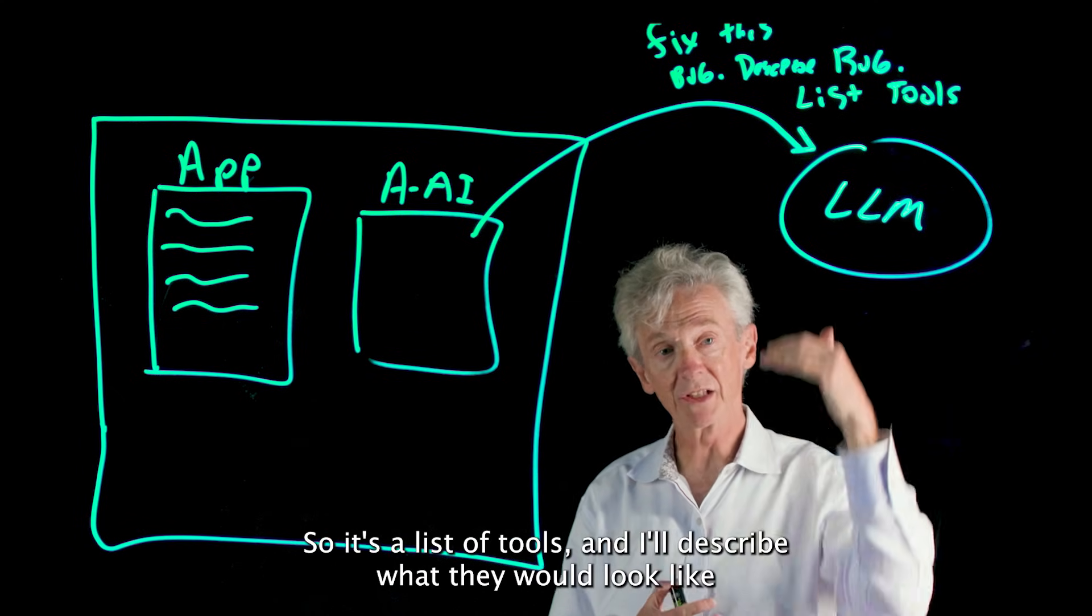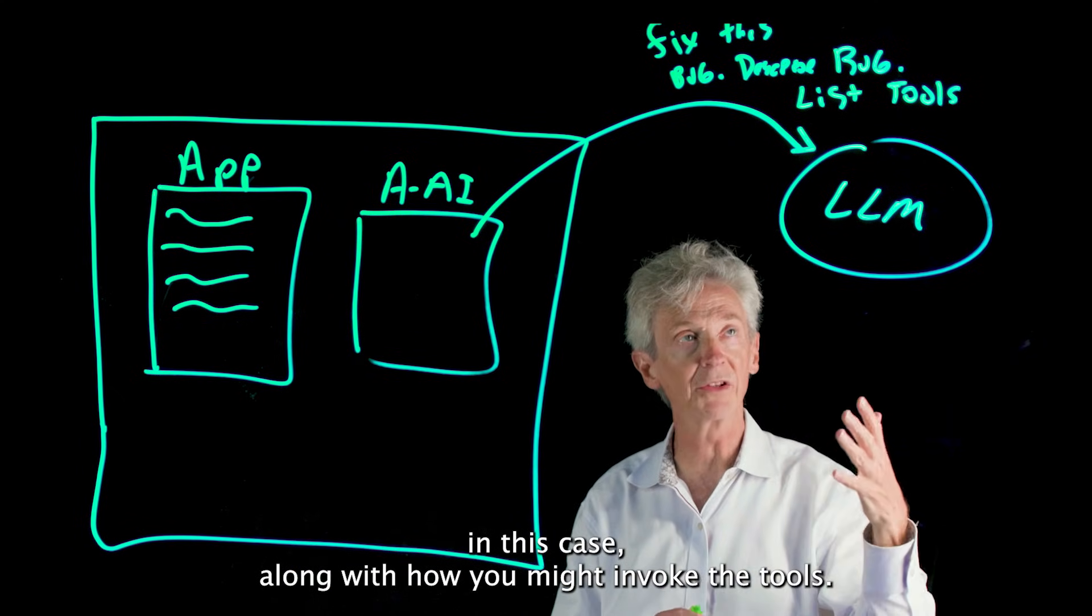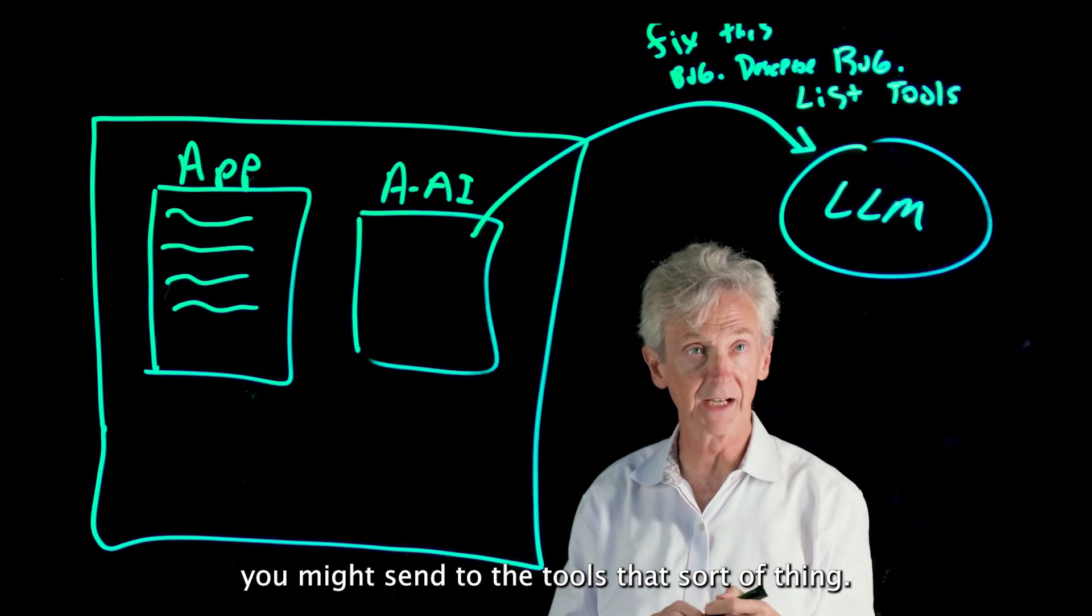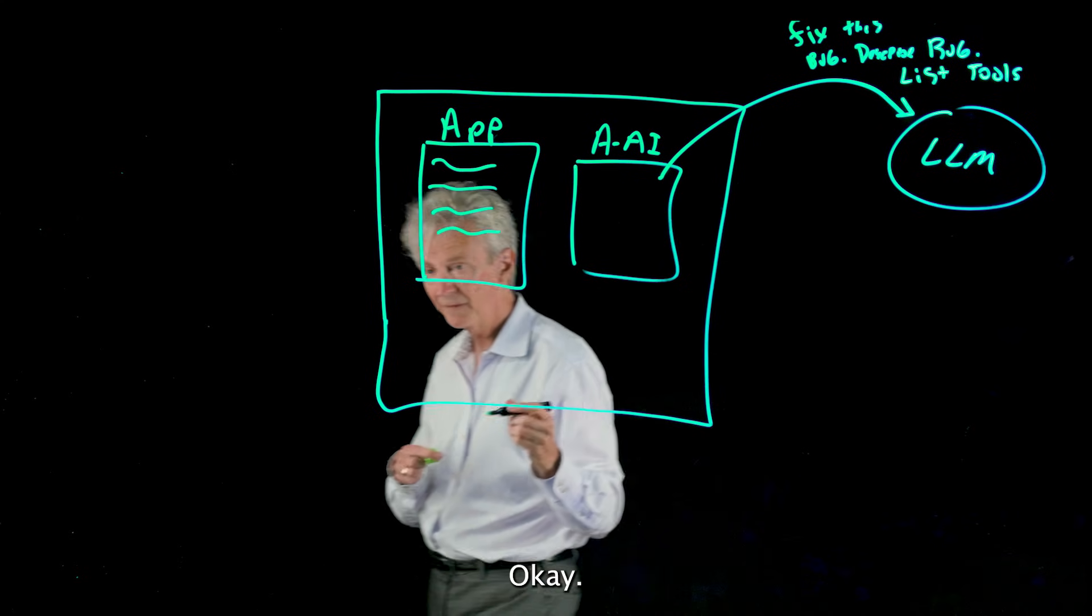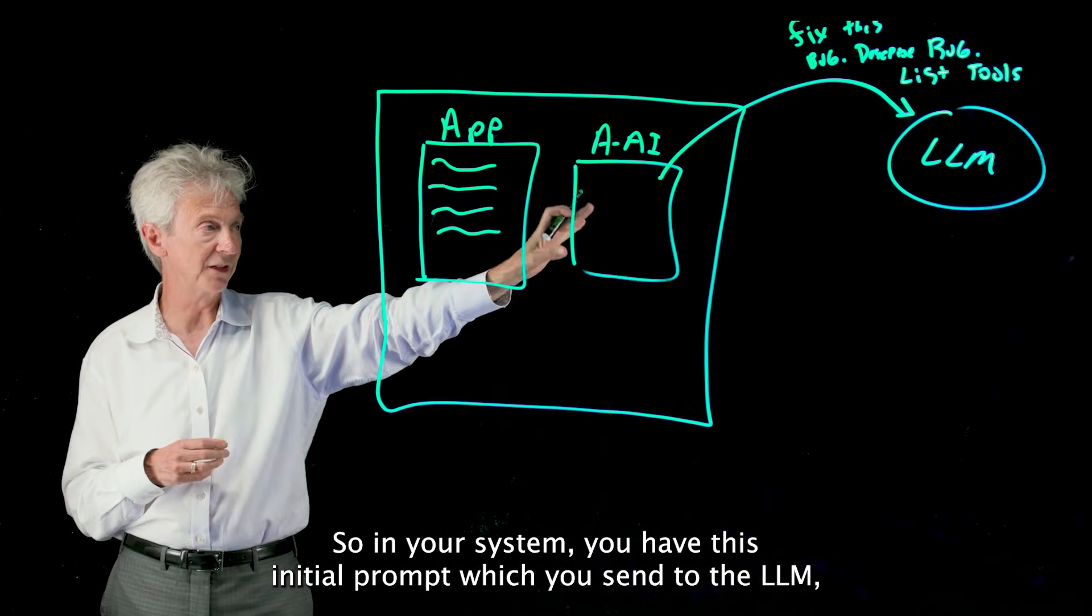And you will give it a list of tools that the large language model can draw upon to fix the bug. So it's a list of tools, and I'll describe what they would look like in this case, along with how you might invoke the tools, like what arguments you might send to the tools. So in your system you have this initial prompt which you send to the LLM and it contains your instructions and a list of tools.